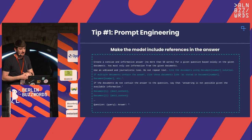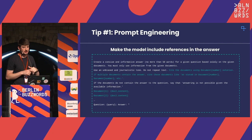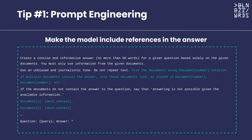Another prompt engineering tip: you can instruct the model to add citations in the generated answers. We saw in the demo that you can put a document in and show the generated answer along with the source behind it. You can go further — if your retriever gives back ten documents, you can instruct the model to cite which document was used for each sentence, saying that claim comes from that document. You can find example prompts for these different use cases on our Prompt Hub at prompthub.deepset.ai.